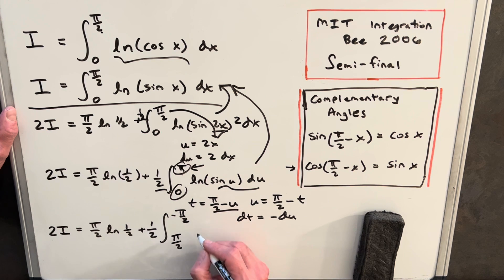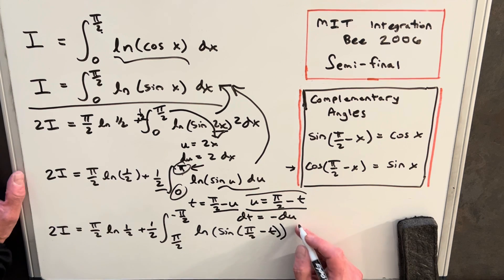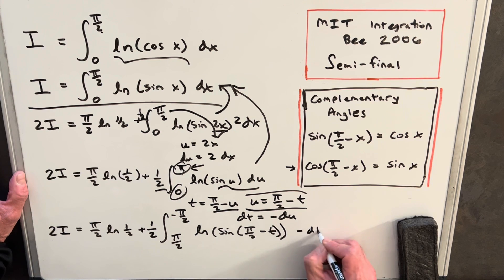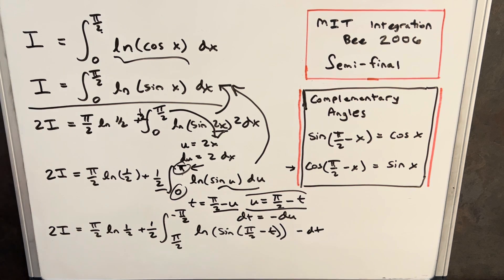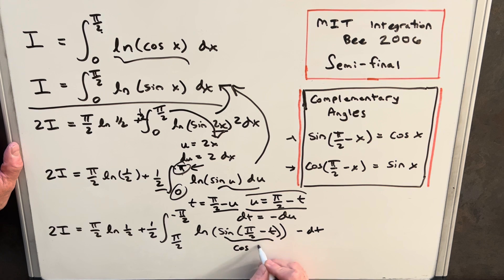And then we'll make our substitution for the u. So ln sine of u, but our u is this, so it's going to be pi over 2 minus t, and for our du we're going to have minus dt. But again, using the complementary angle formula, this piece is going to be cosine of t. And we'll use our minus sign to flip the bounds, so this is going to be positive and this is going to be minus.